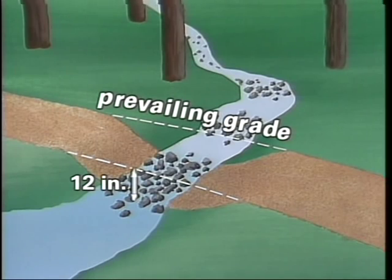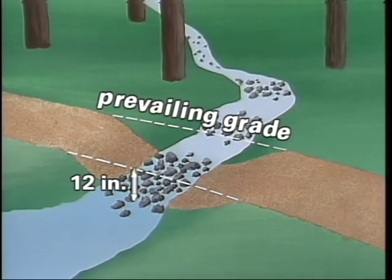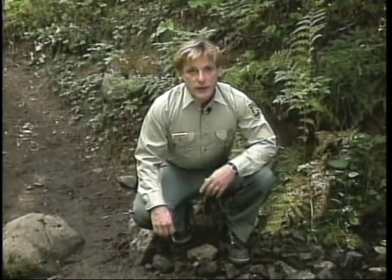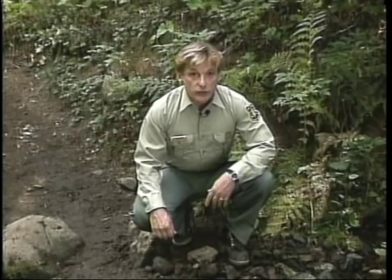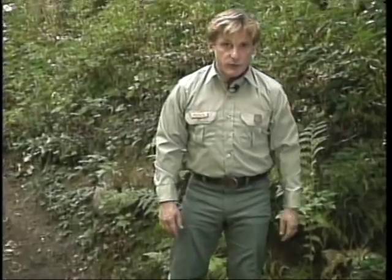Grade dips can also be used in a minor stream crossing to prevent the stream from running down the trail. Construct the dip in the same manner as before, keeping in mind that the downgrade side of the trail must be at least 12 inches above the high water level. A rock spillway may be required. Grade dips are generally used for grades under 8%. They're not recommended for trails with grades over 12% because the trail at the grade dip would be too steep.